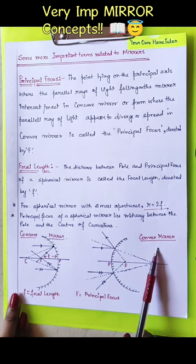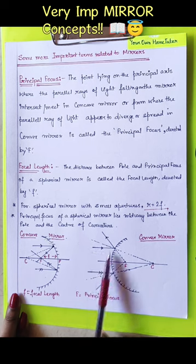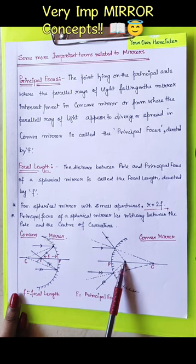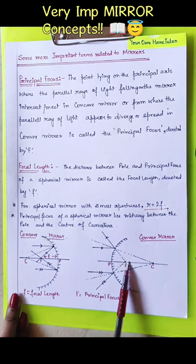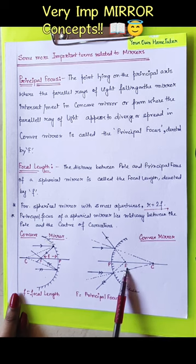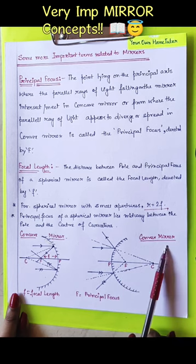And in case of convex mirror, the parallel rays of light appear to diverge from a point. This diverging point is known as the principal focus of convex mirror.